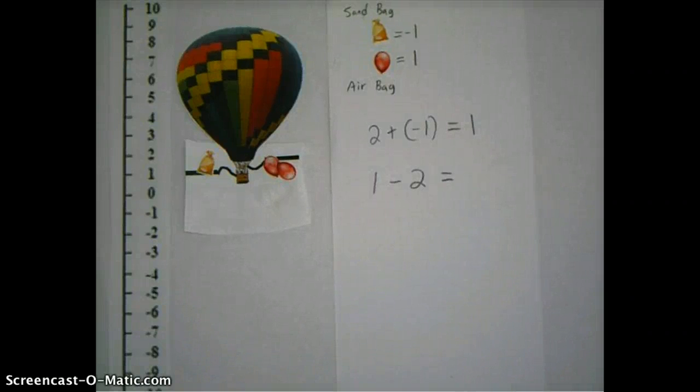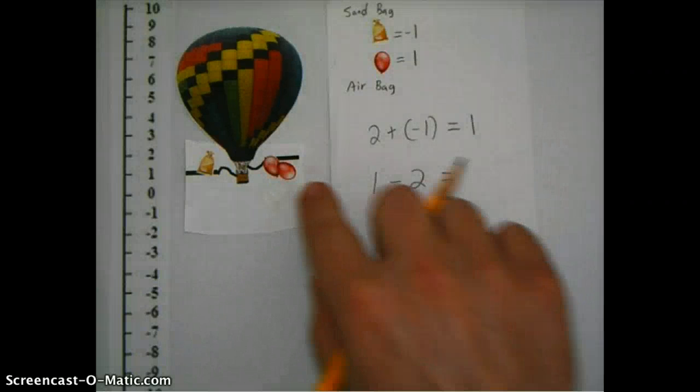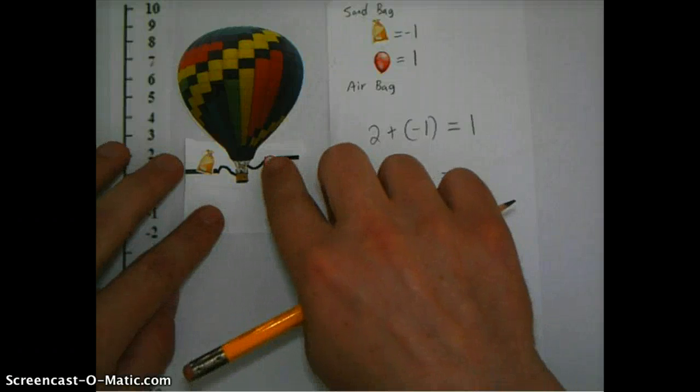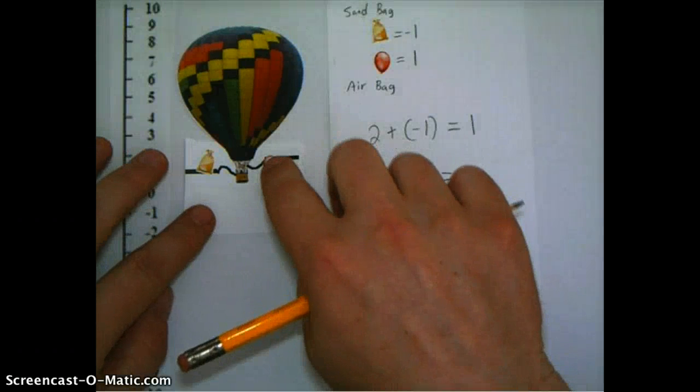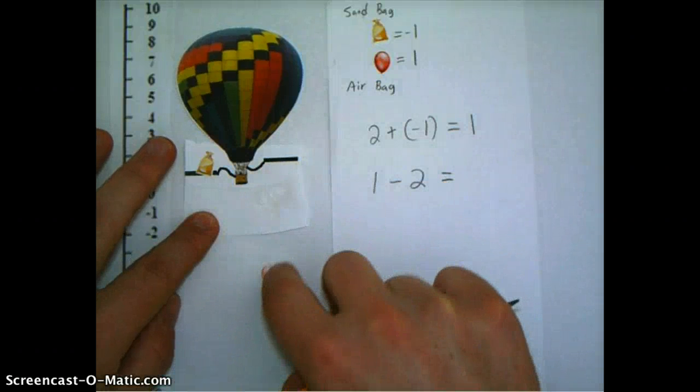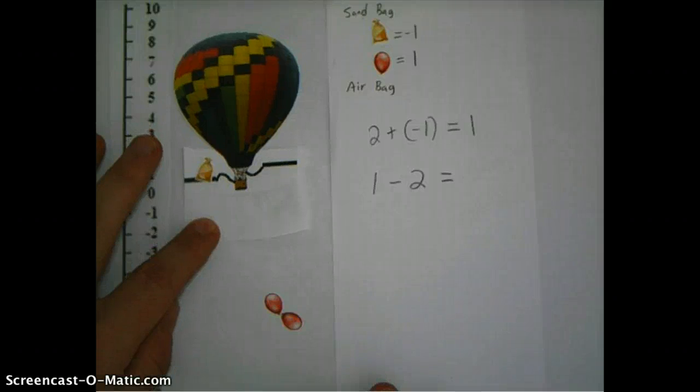Well, subtracting two, well, those are two positive things that I'm subtracting. So I'm taking away two of these airbags. So if I take away those two airbags, which make it float higher, it's going to float lower. In fact, it's going to go down two because those two balloons pushed it up to. Now it's going to drop down two.